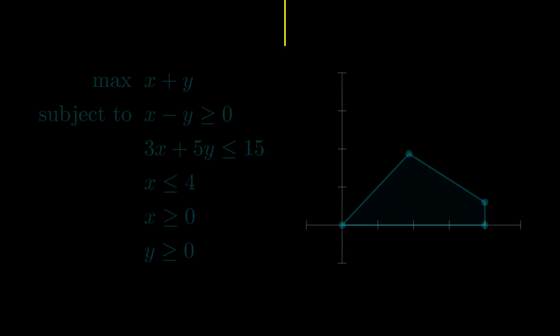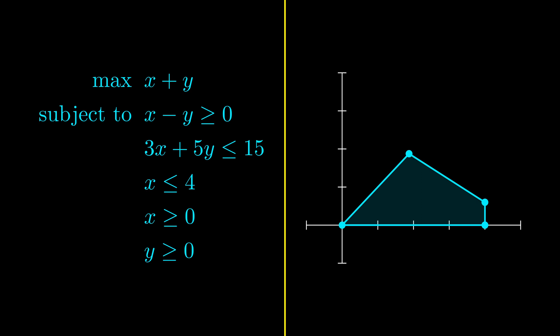Here is a linear program and its feasible region. If a linear program has an optimal solution, it occurs at a vertex of its feasible region. If you want a bit more detail on this fact, I talked about it in my previous video on the graphical method.